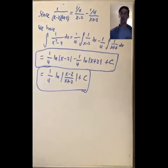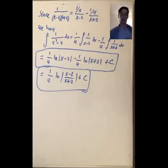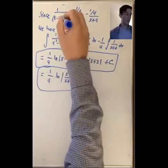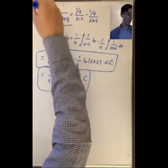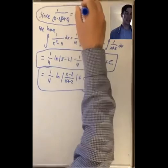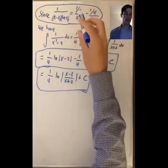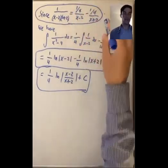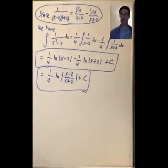This is a pretty standard example of what a partial fractions question on a quiz or exam might look like. The big step is usually figuring out how to rewrite your rational function as a sum of easier rational functions.